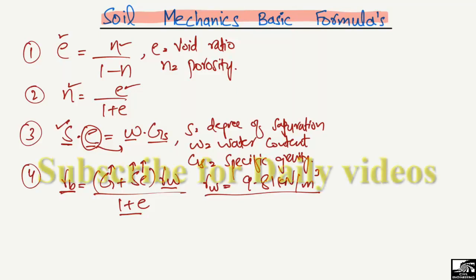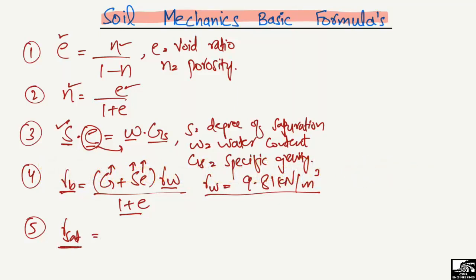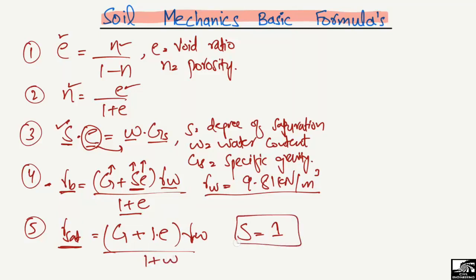The fifth formula is derived from the bulk unit weight formula. For the saturated unit weight, γ_sat, the degree of saturation equals 1 (i.e., 100%). So substituting S = 1 into the bulk unit weight formula gives: γ_sat = (Gs + e)·γw / (1+e). This is how we go from the bulk unit weight formula to the saturated unit weight formula.